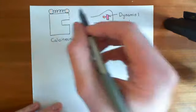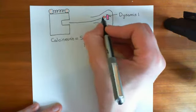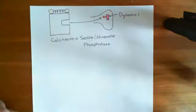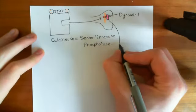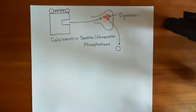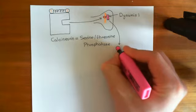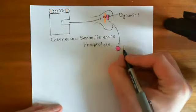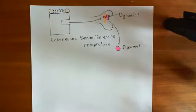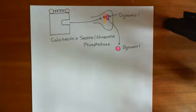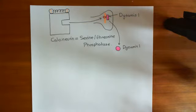What's going to happen is that the calcineurin enzyme will chop that phosphate group off dynamin-1. Dynamin-1 now no longer has the phosphate group bound to it. So when the calcium signal arrives, it results in the activation of dynamin-1, and dynamin-1 is now going to help the clathrin-coated vesicle bud pinch off.